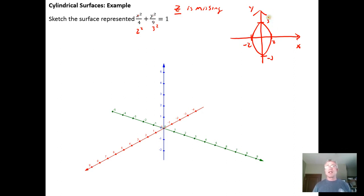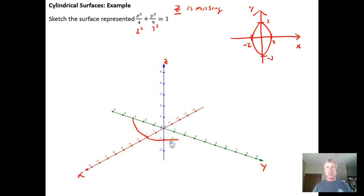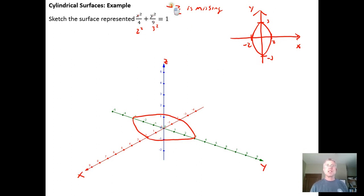Because the z variable is missing, we're going to draw lines that contain the curve that are parallel to the z axis. Here's my x, my y, my z axis. I draw my ellipse in the xy plane — my ellipse would go from negative 3 to 2, from 2 to negative 3, from negative 3 back to negative 2, and from negative 2 it would wrap around to negative 3. So I have this ellipse in the xy plane, and then because the z variable is missing, I need to draw lines that contain the ellipse that are parallel to the z axis. I'm going to try to pick up the key points, those vertices on the ellipse.